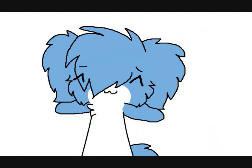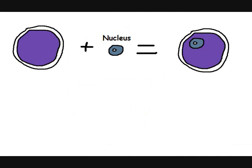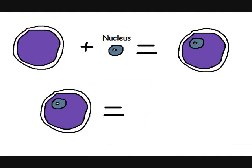Now we're going to be describing the nucleus. The nucleus is the control center and brain of the cell. It also contains the DNA of the cell.